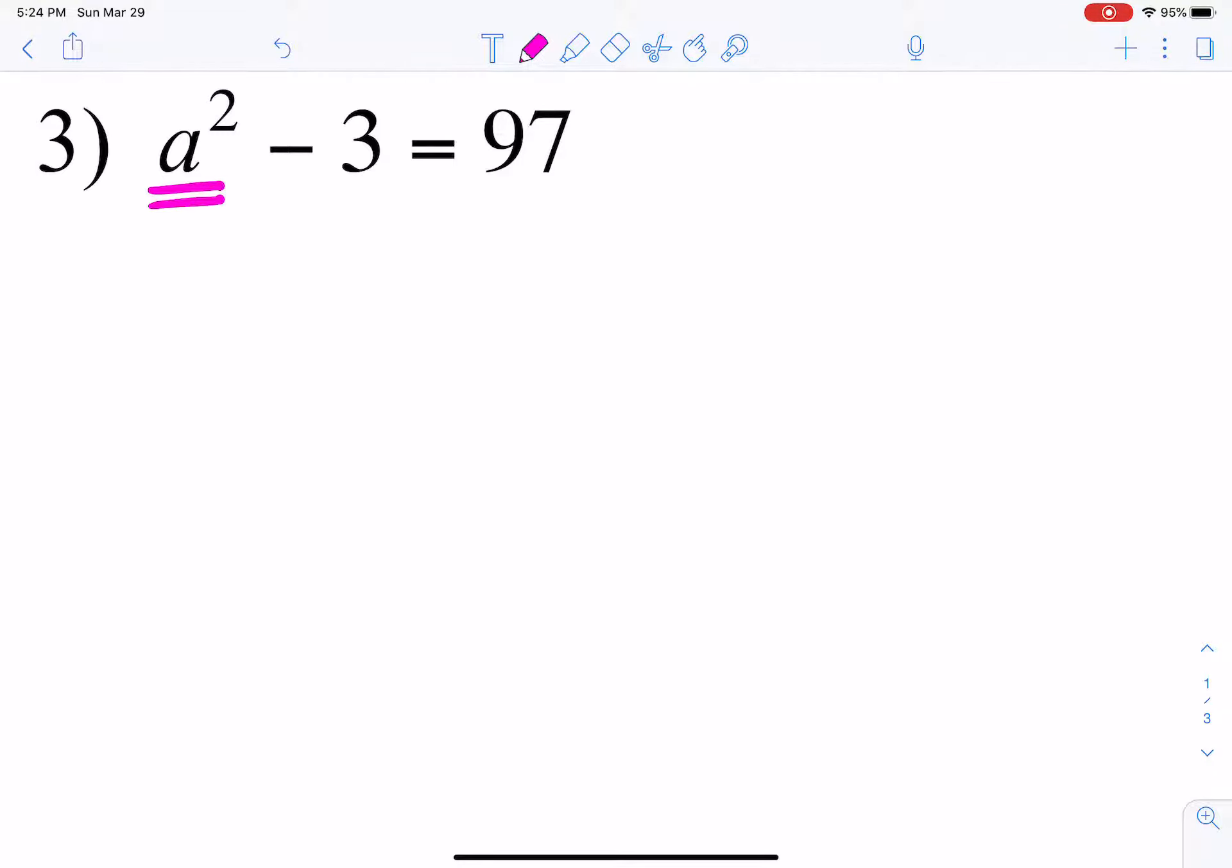So what we're going to do is we're going to isolate that variable. To do so, you're going to add 3 on each side. When you add 3 on each side, you're able to isolate a squared and have the constant on the other side.